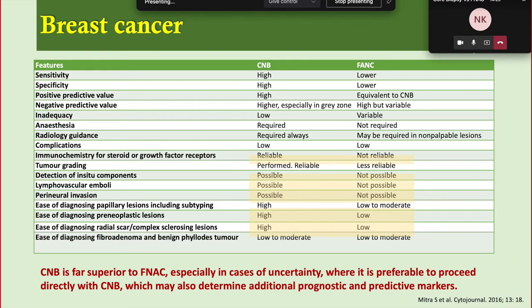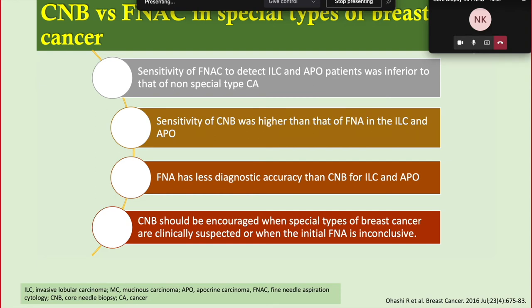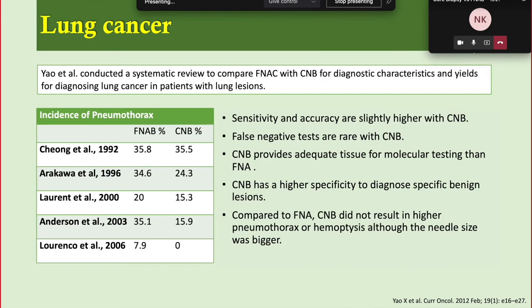This table is taken from Mitra et al., published in Cytology Journal in 2016. In special types of breast cancer like invasive lobular carcinoma, mucinous carcinoma, and apocrine carcinoma, FNAC has very low sensitivity. Core biopsy has higher sensitivity and specificity for detecting these lesions. Core biopsy should be encouraged to decrease the time from detection to treatment initiation. If FNAC is non-diagnostic, it delays treatment and may allow cancer to progress. Core biopsy should be used when special types of breast cancer are suspected or when initial FNAC is inconclusive.